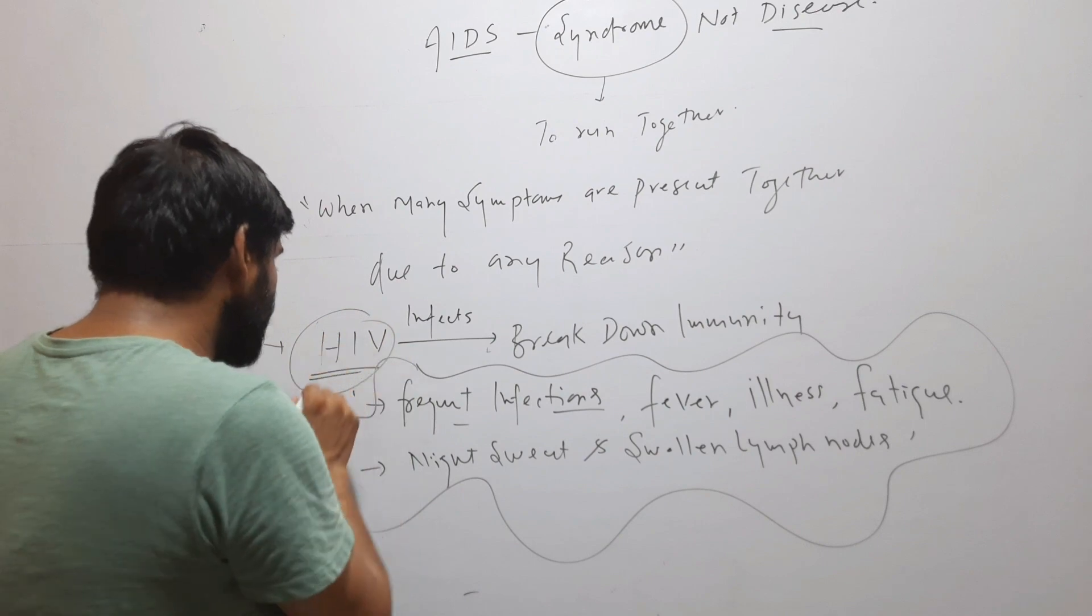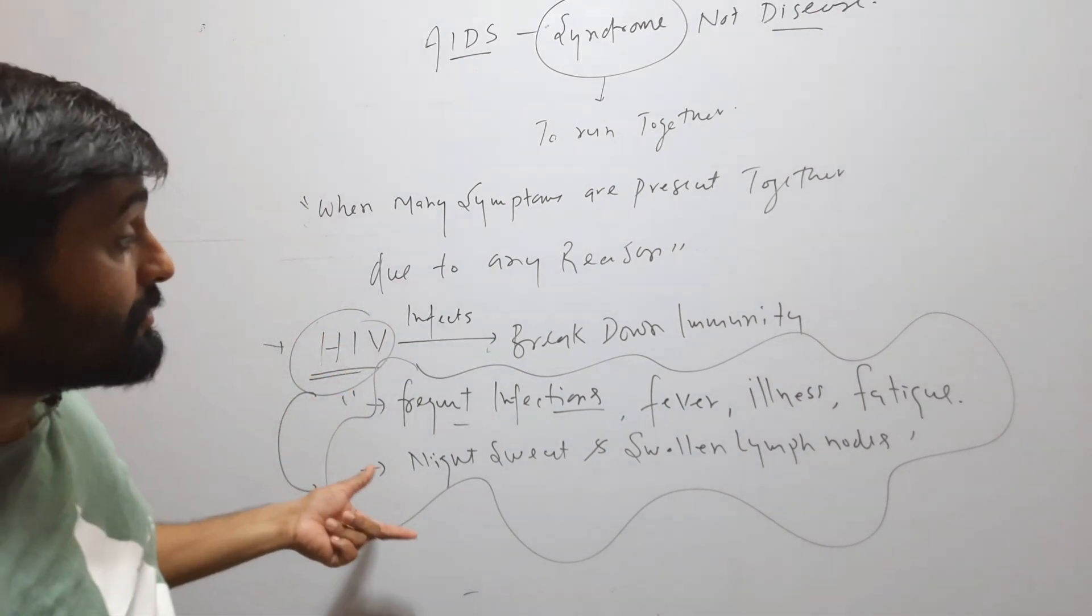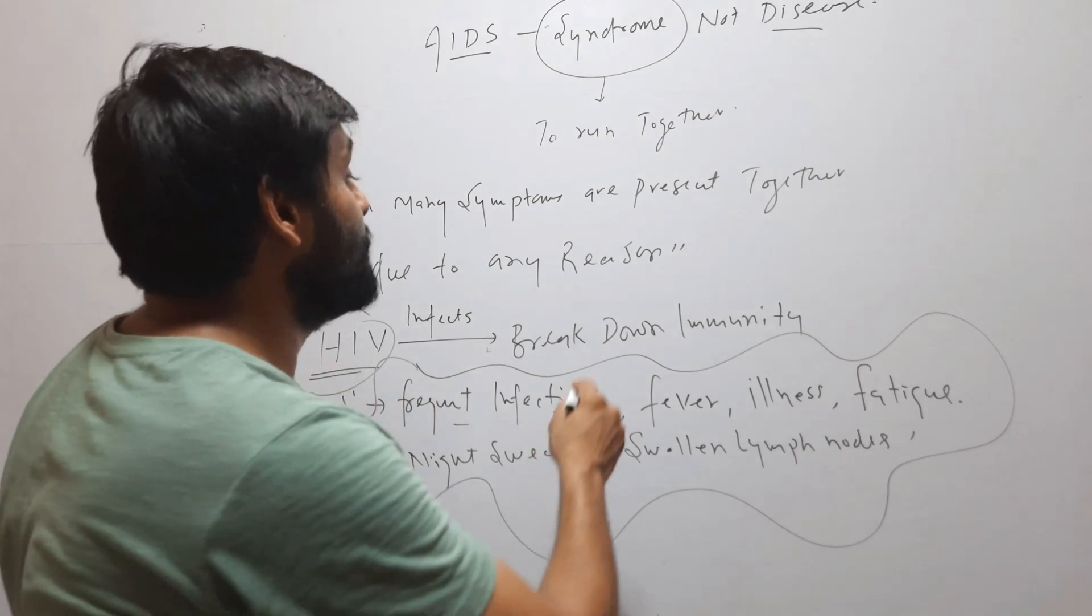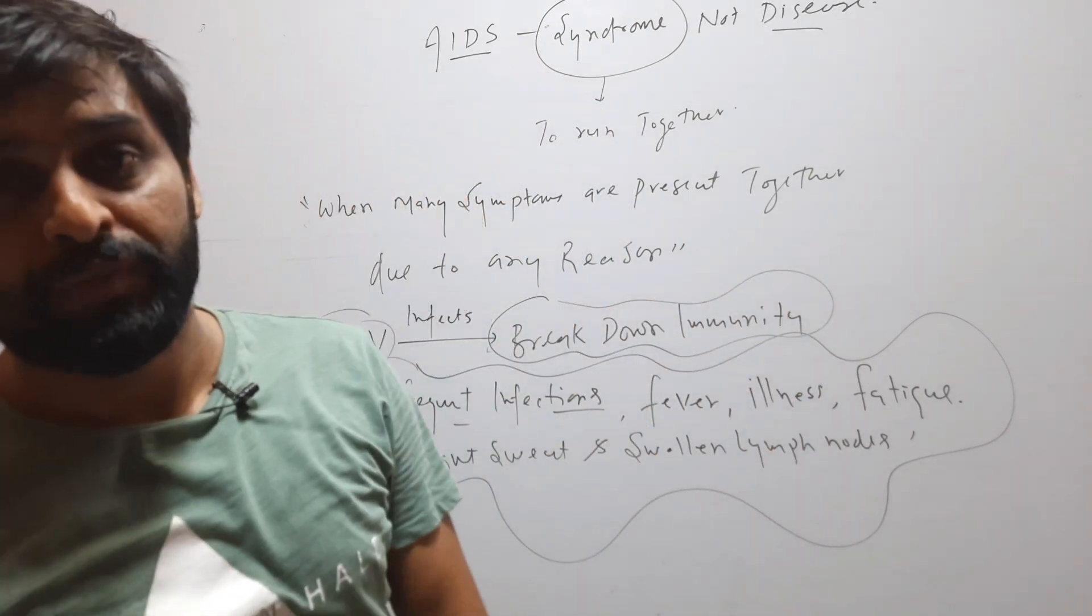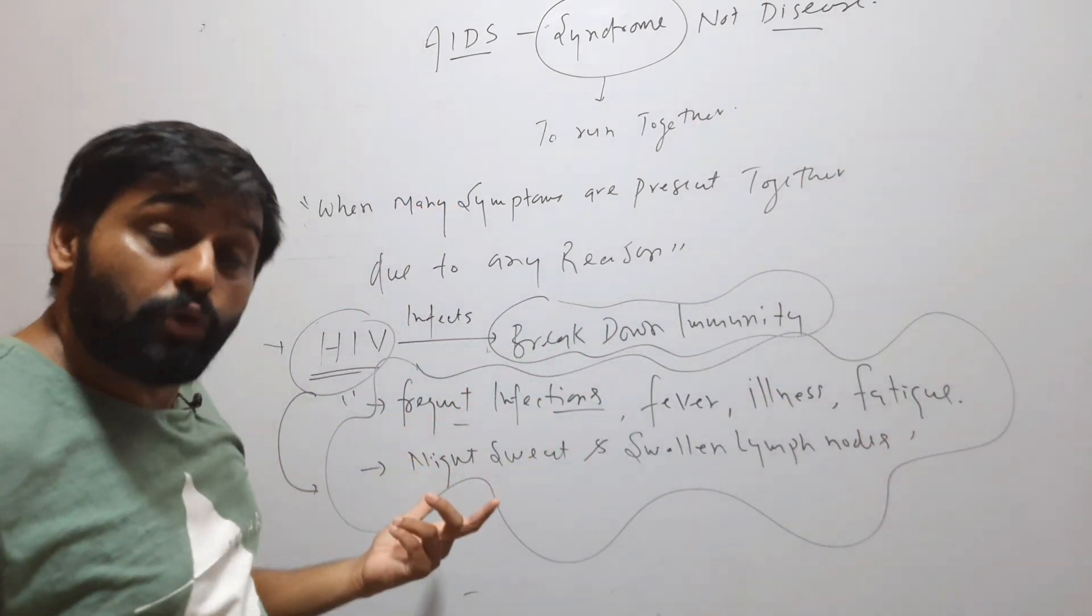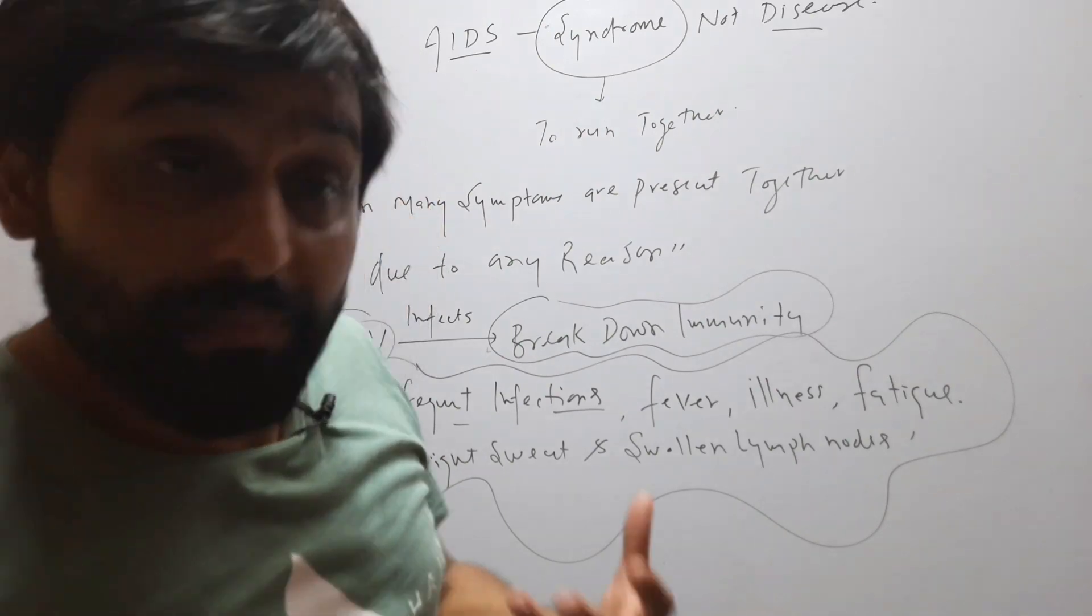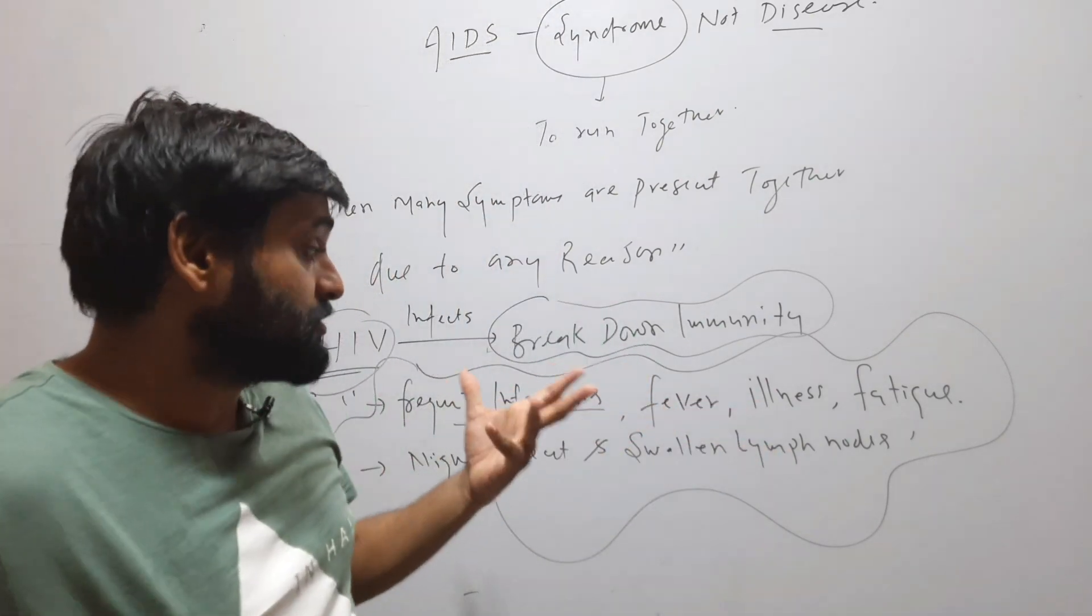So due to this HIV, many symptoms will occur. Why will the symptoms occur? Because this HIV breaks down immunity, so immunity of that person will be weak. So due to this weak immunity, that person will get common infections very easily.